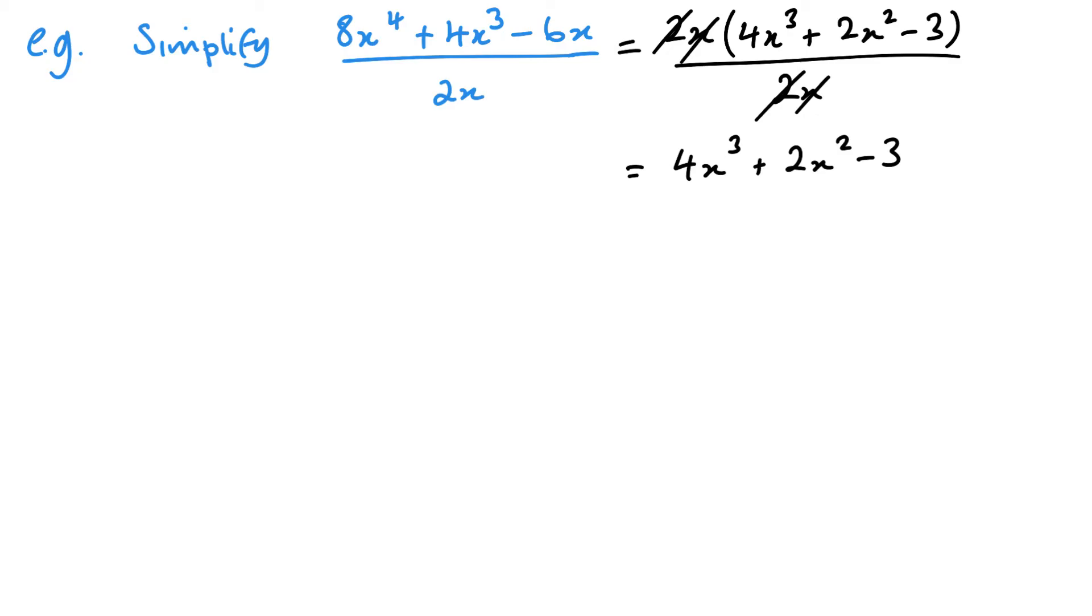Now another way of thinking about it is taking my fraction and separating it out: 8x to the 4 over 2x plus 4x cubed over 2x minus 6x over 2x. I can do this because if they're all at the same bottom, it is the same as adding the top up over this bottom. That means I can go from this to this. Now looking at each one, we can cancel an x and cancel the 2, and that leaves me with 4x cubed.